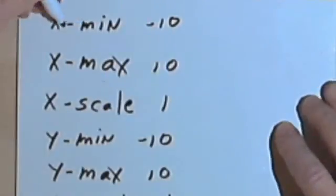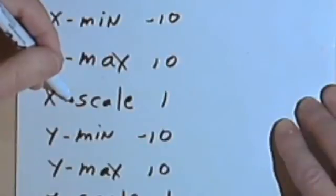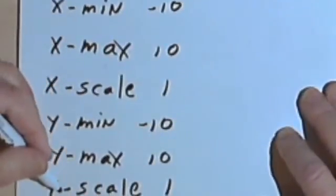So if I press the window button on the calculator, I'm going to have x-min and x-max and x-scale and then y-min, y-max and y-scale.